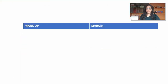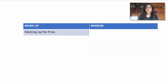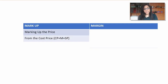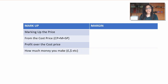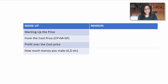Let's first see what is margin and markup — the difference. Markup, as the word says, is marking up the price. From what are you marking it up? You're marking it up from the cost price. Cost price plus the markup is equal to the selling price. So basically, in short, it means it's your profit over the cost price — it's the money or cash that you're making from your cost price.